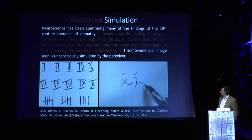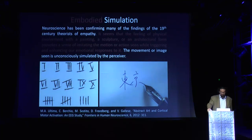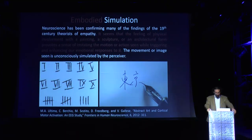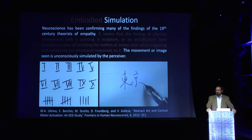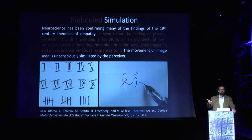The feeling of physical involvement with a painting, sculpture, or architectural form provokes a sense of imitating the motion or action seen while triggering and enhancing our motor responses to it. The movement or image seen is unconsciously simulated by the perceiver — this is embodied simulation. We simulate the world around us in order to understand it. When I walk around this room, my body simulates the vertical and horizontal lines and your movements bodily. Of course you don't actually act it out, but the body nonetheless simulates it.